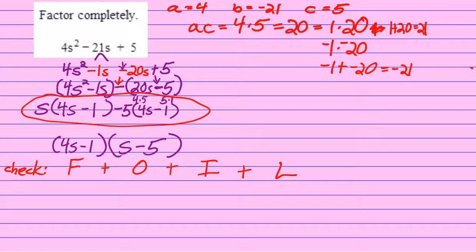So first is going to be 4s times s, which is 4s squared. Outside is going to be 4s times negative 5, which is going to be negative 20s. Inside is going to be negative 1 times s, which is negative 1s.